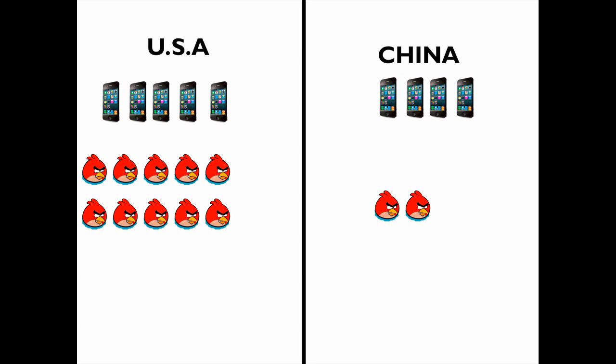The two countries are splitting their 40 hours — 20 hours to produce one good and 20 to produce another. The US actually produces five iPhones and ten Angry Birds. There's no trade, so that's what they consume. China produces four iPhones and two Angry Birds, and with no trade, that's what they consume.